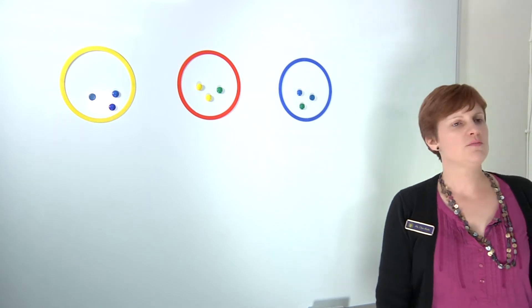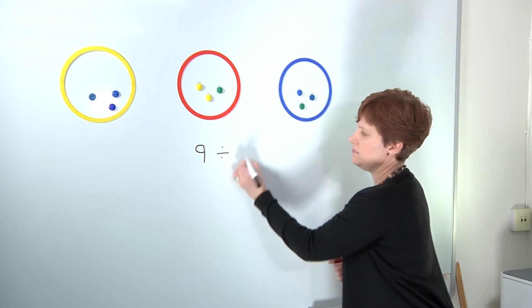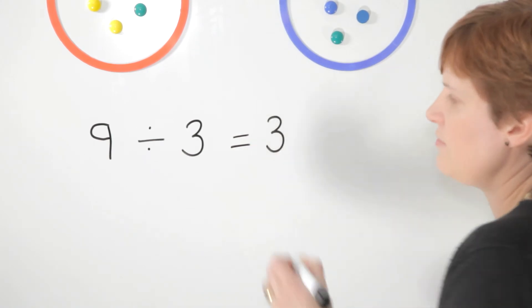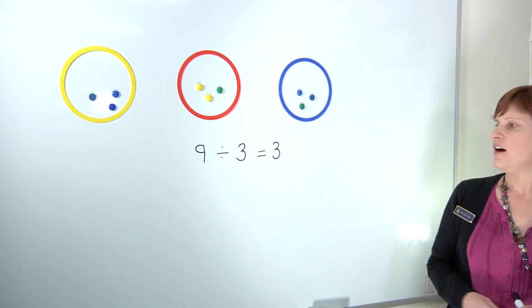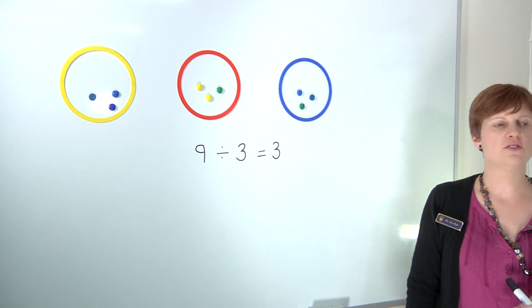And so then we would move on to writing that down and introducing lots of different vocabulary to do with division. So we've said that we had nine sweets and we shared them between three people and they had three sweets each. We are showing the children right from reception how to write a division number sentence and how to use the vocabulary.